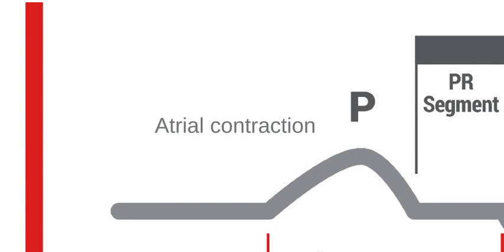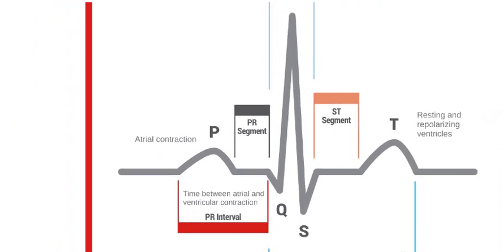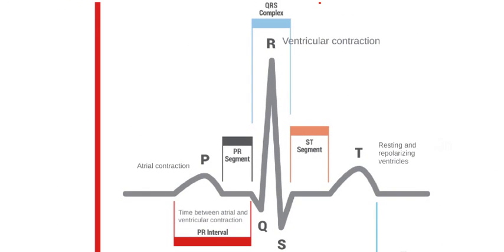When blood enters the atria of the heart, an electrical impulse is sent out from the SA node and conducts through the atria, resulting in atrial contraction. This registers as the P wave on an ECG strip. The time between atrial and ventricular contraction registers on an ECG strip as the PR interval, while the ventricular contraction registers on an ECG strip as the QRS complex.